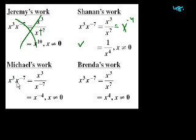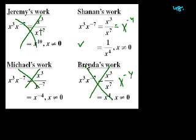Michael's work, x to the third over x to the minus 7. He made the same mistake as Jeremy. x to the minus 7, when you put it in the denominator, becomes x to the positive 7. That's not right. And then Brenda's work got this step right. But then this should be x to the minus 4. x to the minus 4 power. So this is not correct. So the only person who got it right was Shannon. And what choice is that? Shannon is choice C.